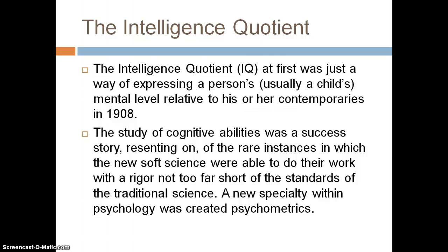The study of continuity. Ability was assessed using reasoning, in the relevant instances in which the new soft sciences were able to do their work with reasons not too far from the standards of traditional science. A new subspecialty within psychology was created: psychometrics. Psychometrics is a very key part of the argument around IQ.